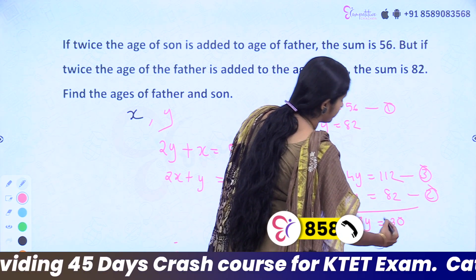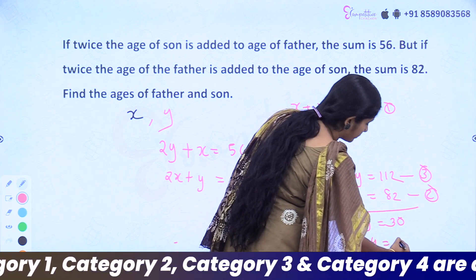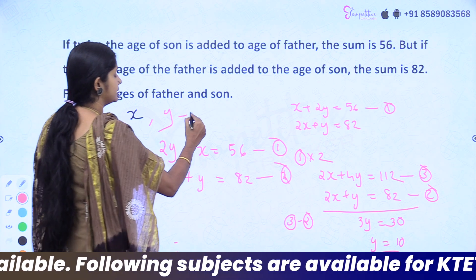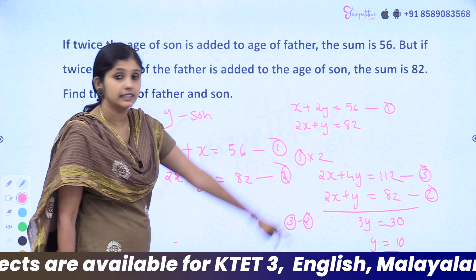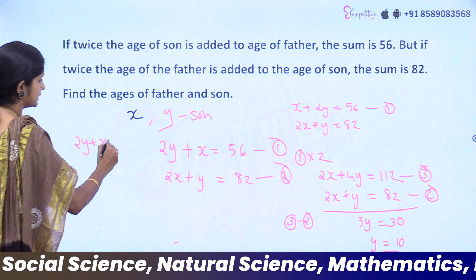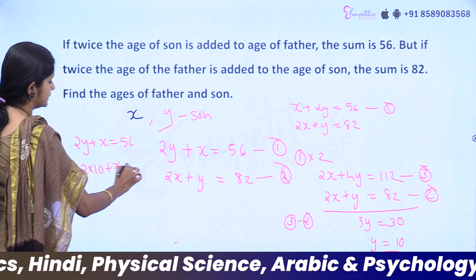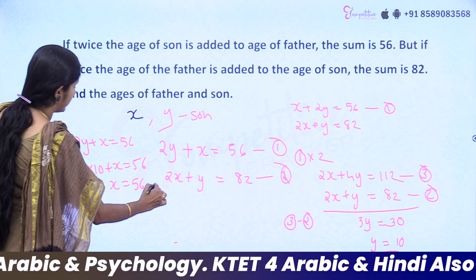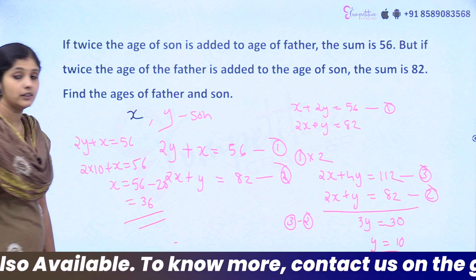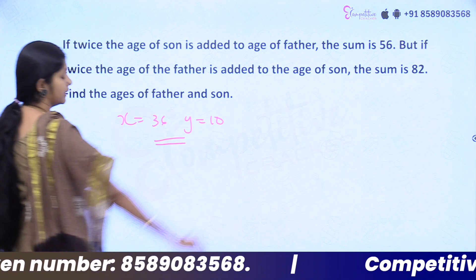So 3y equals 30, therefore y equals 10. Y is the son's age, so the son's age is 10. To find the father's age, substitute y equals 10 into equation 1: x plus 2 into 10 equals 56, so x equals 56 minus 20, which gives x equals 36. The father's age is 36 and the son's age is 10.